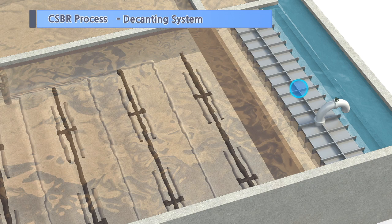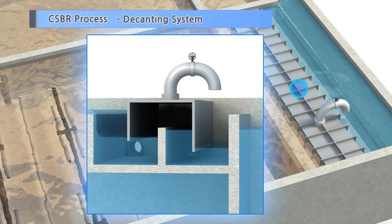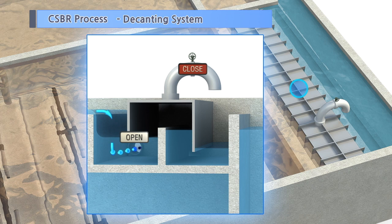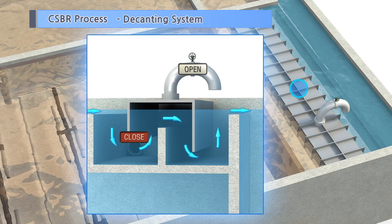The decanting system is a fixed discharge device which adjusts the discharge of the treated water by using air pressure. It consists of a hood and a valve to control the air discharge. During normal operation, the discharge of the treated water is blocked by the hydraulic structure of the decanter. When it is time to discharge the treated water, the air valve opens to discharge the air in the hood, which naturally discharges the treated water due to the water level difference.